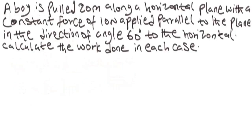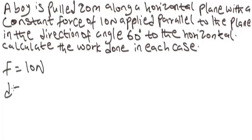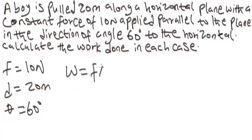Let's look at this question: a ball is pulled 20 meters along a horizontal plane with a constant force of 10 newtons applied at an angle of 60 degrees to the horizontal. Calculate the work done. Our parameters: force is 10 newtons, distance is 20 meters, and theta is 60 degrees.